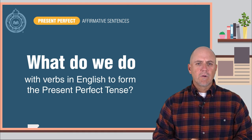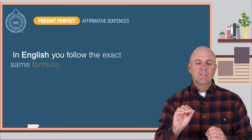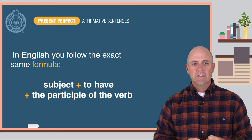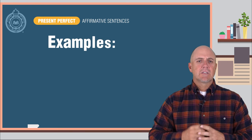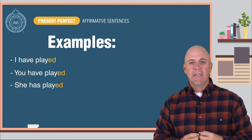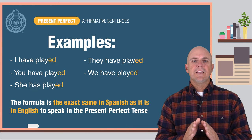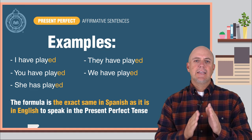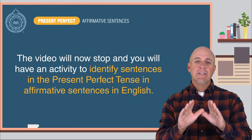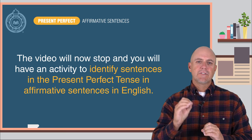So what do we do with verbs in English to form the present perfect tense? The answer is also simple. In English, you follow the exact same formula: Subject plus to have plus the participle of the verb. Let's look at some examples: I have played. You have played. She has played. They have played. We have played. So to repeat, the formula is the exact same in Spanish as it is in English to speak in the present perfect tense. The video will now stop and you will have an activity to identify sentences in the present perfect tense in affirmative sentences in English.